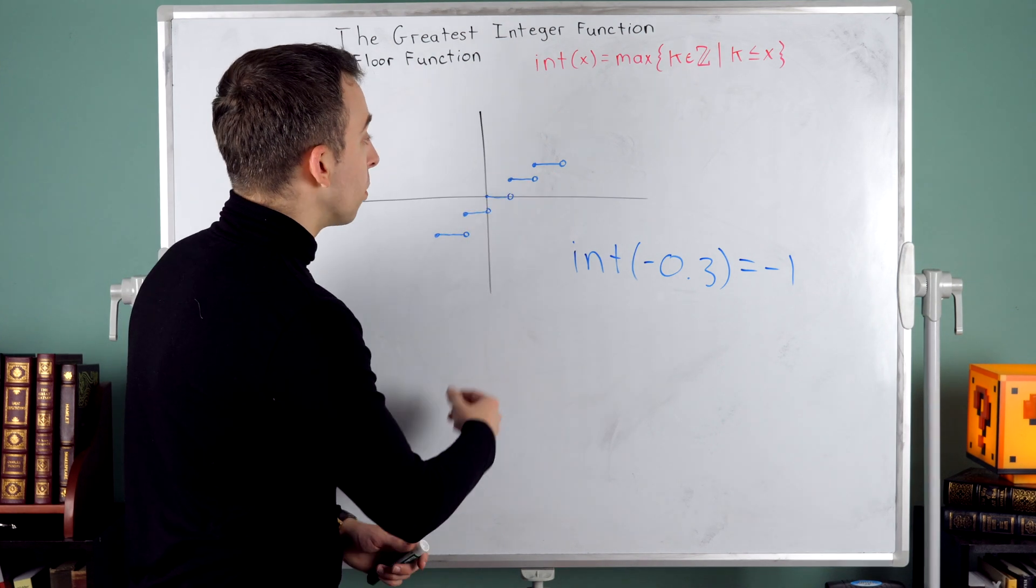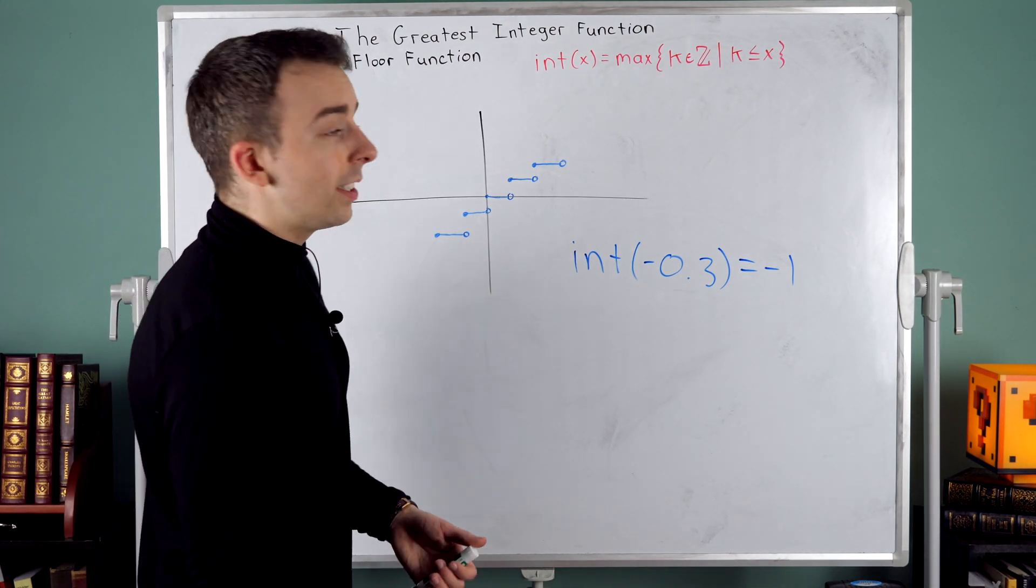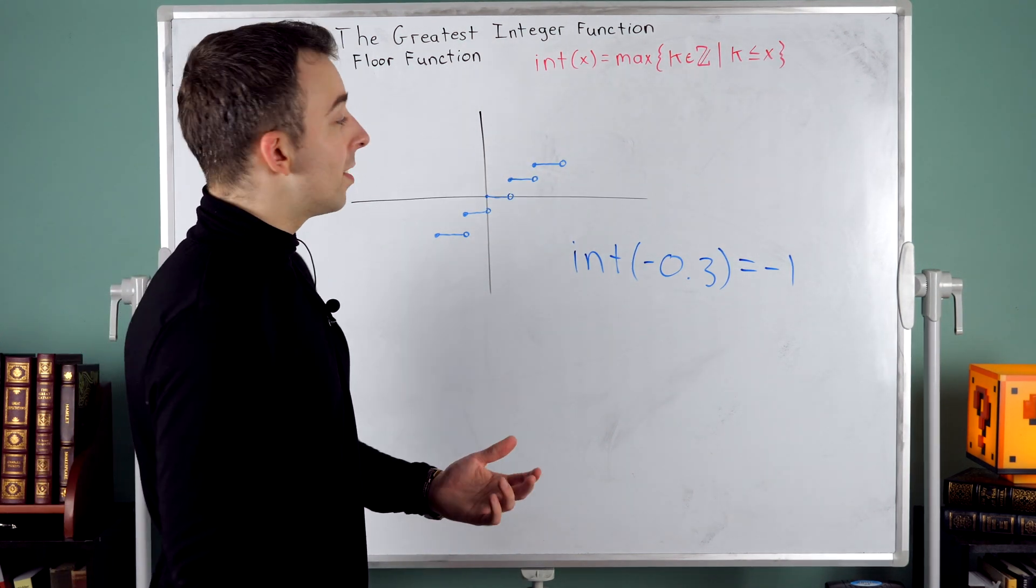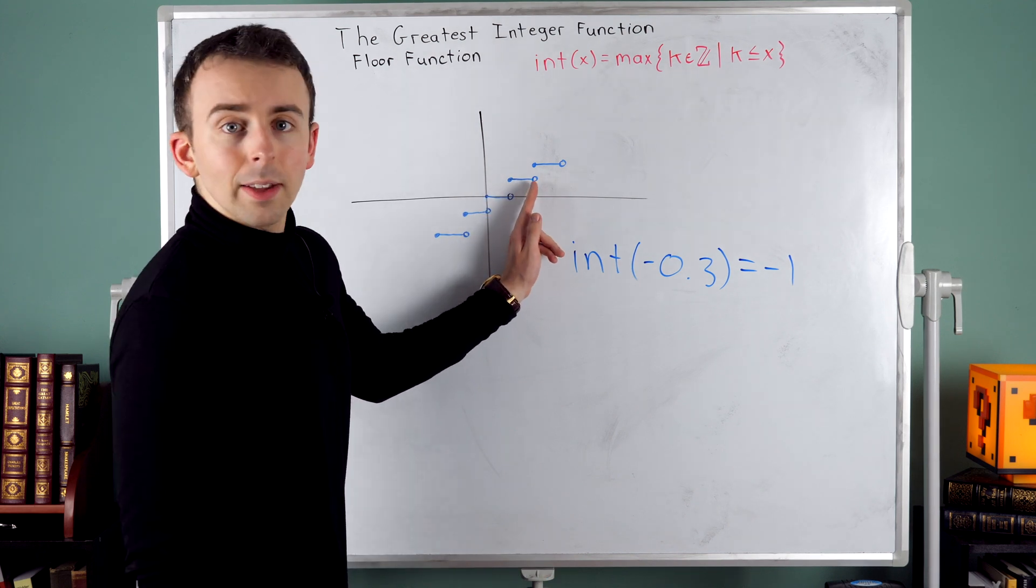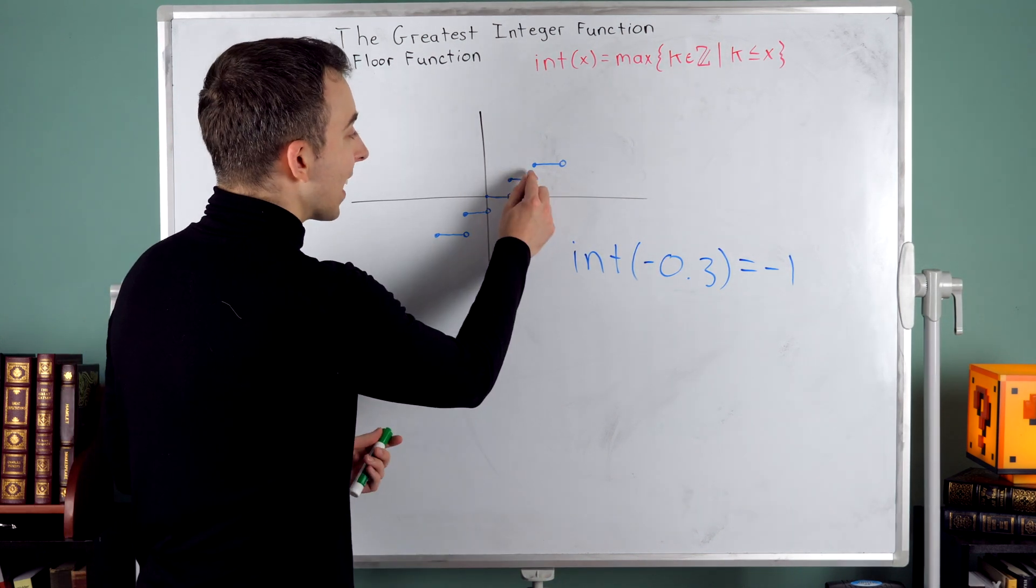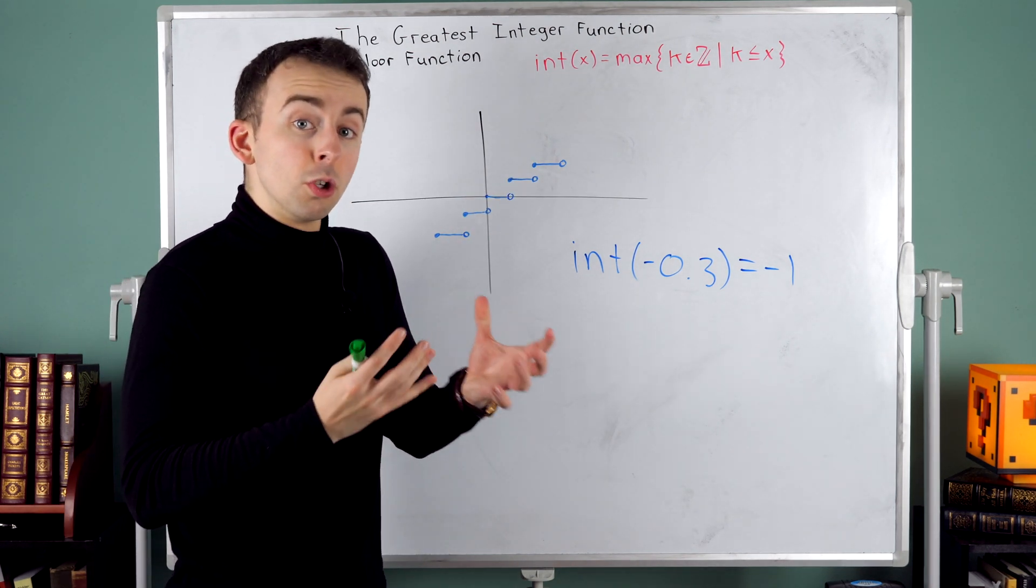But as we approach x equals two from the right, values like 2.01 and 2.001, those are being rounded down to two. So we would say that the left hand limit at x equals two is one. However, the right hand limit at x equals two is two.